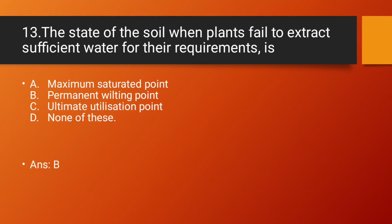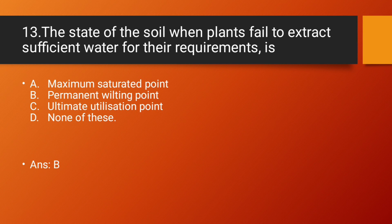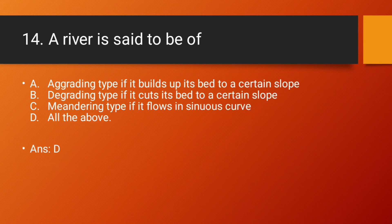Question number 13: The state of the soil when plants fail to extract sufficient water for their requirement is — Option A: Maximum saturation point. Option B: Permanent wilting point. Option C: Ultimate utilization point. Option D: None of the above. Answer: Option B — Permanent wilting point. Explanation: Permanent wilting point is the stage of the soil when a plant fails to extract sufficient water for its requirement.